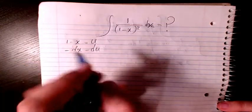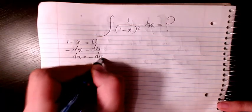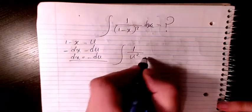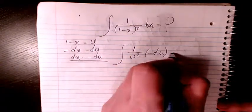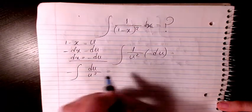will be equal to du, or dx will be equal to negative du. So I will have here 1 over u², and instead of dx I can write negative du, so I will have negative du over u².